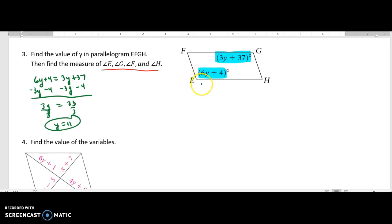Now to find the angles here, I'm going to do 6 times 11 plus 4, which gives me 66 plus 4, which gives you 70 degrees. Right away, what is G going to be then? 70.